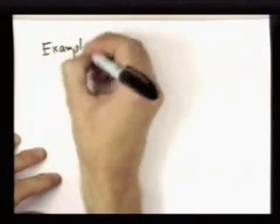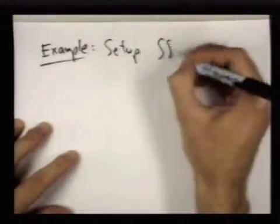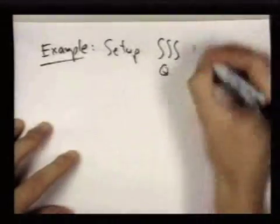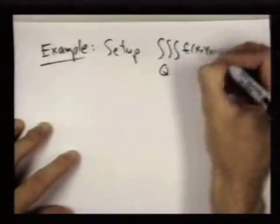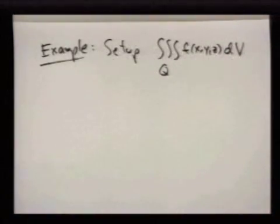So as an example, let me set up the triple integral over Q of a function f(x, y, z).